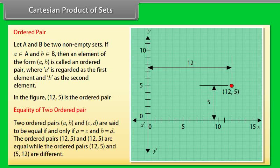Equality of two ordered pairs: (12, 5) and (5, 12) are different ordered pairs.